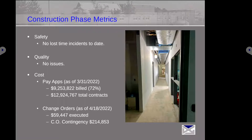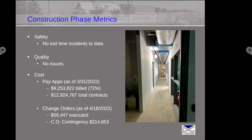On the bottom you can see the change orders — that's as of yesterday. This number down here has been shown as a negative because of all the backwards movement in the beginning with the VE items, getting some money back in our contingency. We've now surpassed and we're dipping into that contingency now. It was $279,000, and that's because we just brought in the changes for that alternate ten bathroom across from the main office.